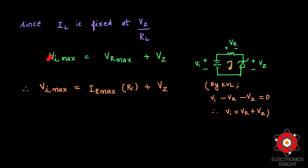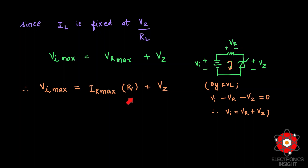VI_max is defined by KVL as VR_max plus VZ, since VI minus VR minus VZ equals zero. Therefore VI_max equals VR_max plus VZ, where VR_max equals IR_max multiplied by R.